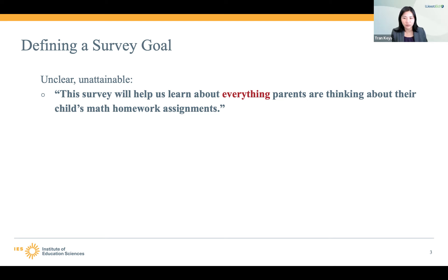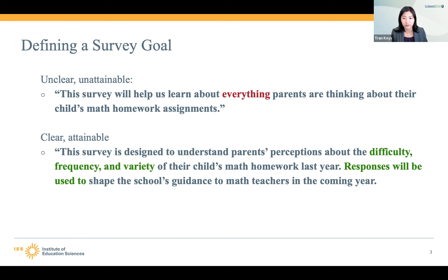An example of an unclear, unattainable goal is: "This survey will help us learn about everything parents are thinking about their child's math homework assignments." The word "everything" is highlighted — there is no survey that will allow you to capture everything. It's just not realistic. So instead, I rewrote the survey goal. The clear, attainable survey goal is: "This survey is designed to understand parents' perception about the difficulty, frequency, and variety of their child's math homework last year. Responses will be used to shape the school's guidance to math teachers in the coming year." It's a very defined survey goal that honors your respondents, their time, and why you're asking them this information.